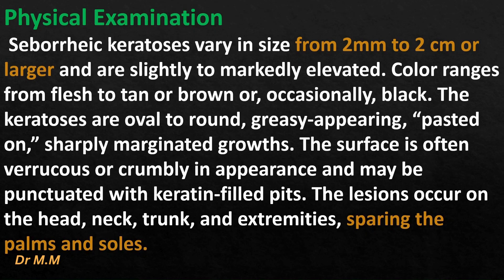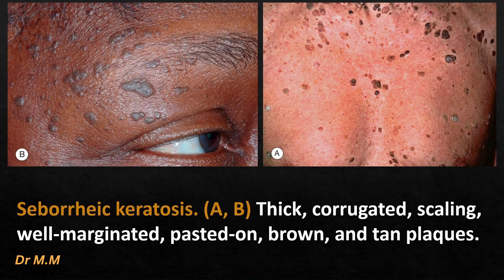Physical examination: seborrheic keratosis vary in size from 2 millimeters to 2 centimeters or larger, and range from slightly to markedly elevated. Color ranges from flesh to tan, brown, or occasionally black. The keratoses are oval to round, greasy-appearing, pasted-on, sharply marginated growths. The surface is often verrucous or crumbly in appearance and may be punctuated with keratin-filled pits. Lesions occur on the head, neck, trunk, and extremities, sparing the palms and soles.